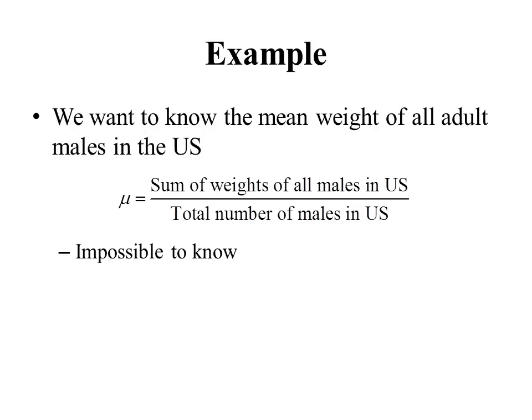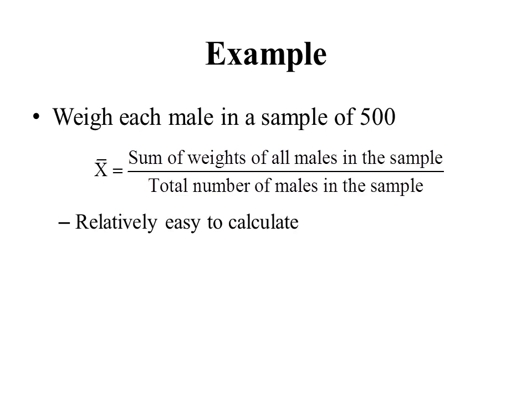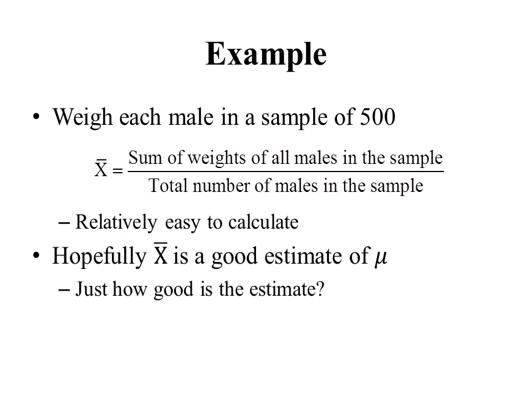To illustrate this idea, let's look at an example we've seen before. Suppose we want to know the mean weight of all adult males in the United States. To know that number exactly, we'd have to weigh every single male, add up all their weights, divide by the total number, and we'd call that number mu — the population mean. That's impossible, so instead we weigh each male in a sample of 500. We calculate x-bar, the sample mean, and our hope is that x-bar is a good estimate of mu. But whenever we estimate something, we always want to ask: just how good is that estimate?